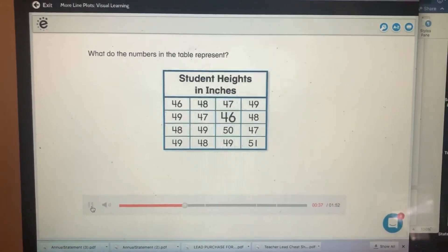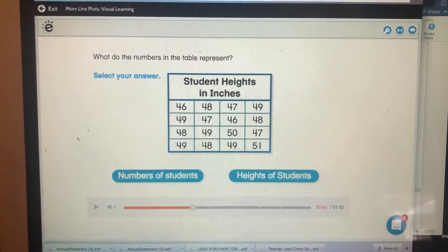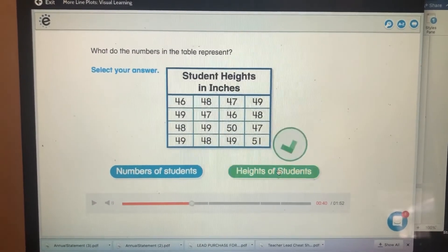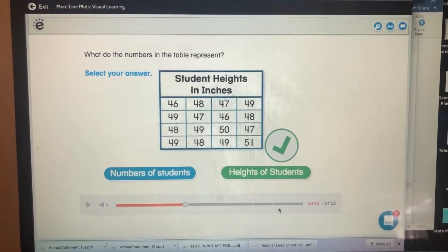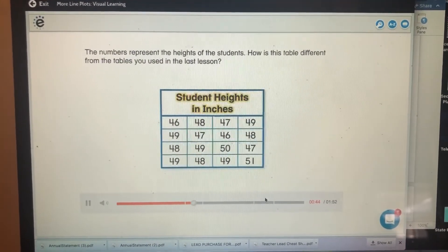What do the numbers in the table represent? Select your answer. It represents how tall are the heights of the students. Remember, the labels are on the chart. The numbers represent the heights of the students.